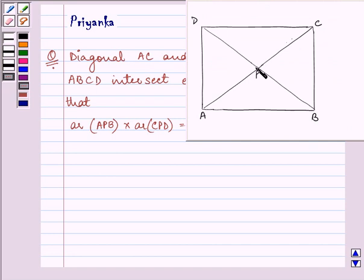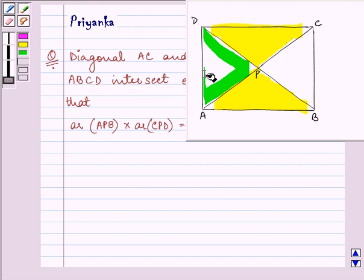So we need to prove that area of APB, that is this triangle, into area of CPD, that is this triangle, is equal to area of APD into area of BPC.